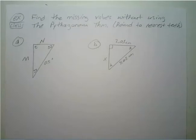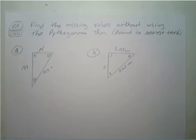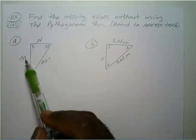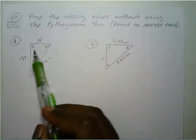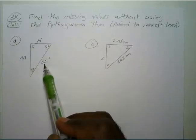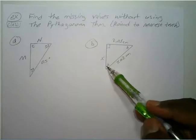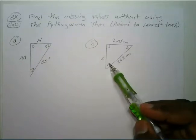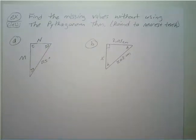We want to find the missing values without using the Pythagorean theorem. For triangle A, you have angles 53 and 37 degrees, with a side of 0.5 inches, and missing sides M, N, and angle T. For triangle B, you have sides 2.01 and 4.02, with missing side X and missing angles A and B. Press pause and try both of these on your own.